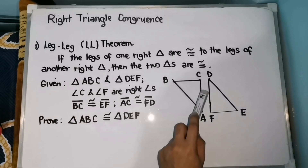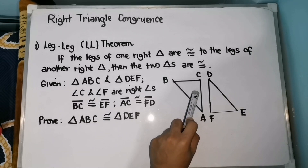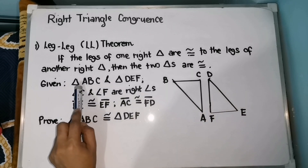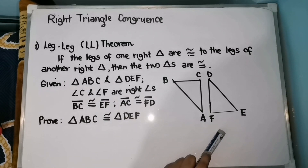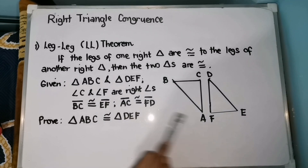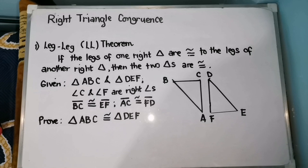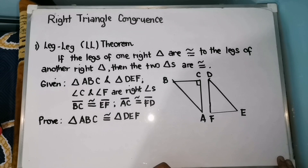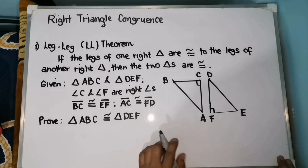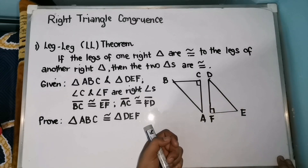Let's prove whether two triangles are congruent by applying the LL congruence theorem. We have Triangle ABC and Triangle DEF as our given triangles. Another given is that angle C and angle F are right angles, so we put a special marking — angle C is a right angle and angle F is also a right angle, meaning these two triangles are right triangles.